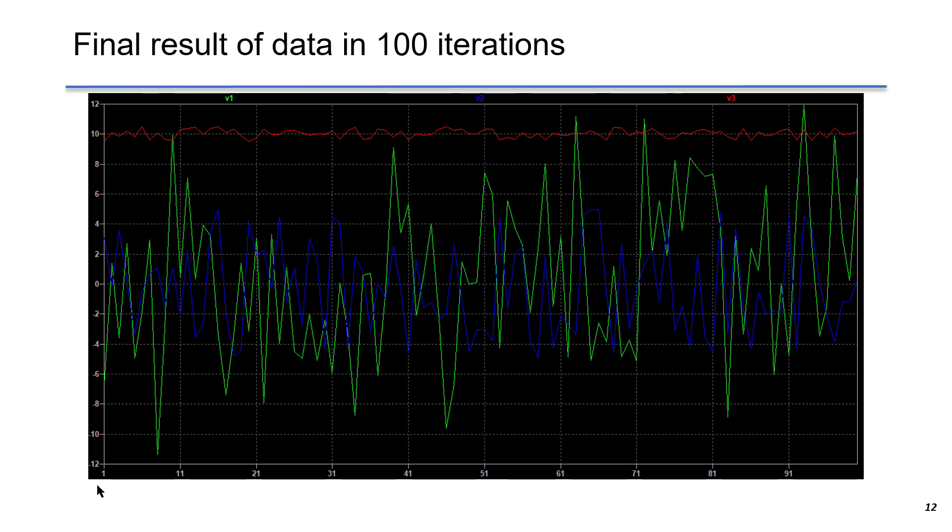It shows the final result of data in 100 iterations. The y-axis is the voltage level of each distribution. X-axis shows the iteration from 1 to 100.